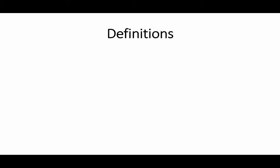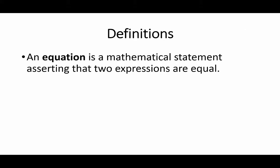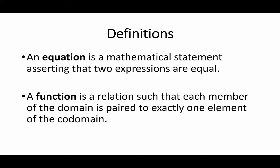Let us review some basic definitions. An equation is a mathematical statement asserting that two expressions are equal. A function is a relation such that each member of the domain is paired to exactly one element of the co-domain. A relation is a set of ordered pairs.